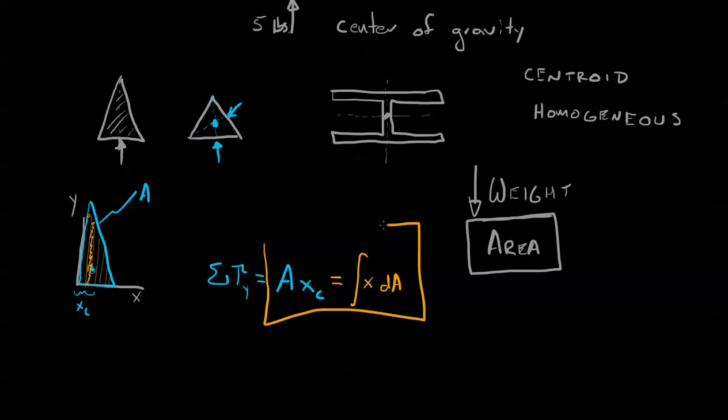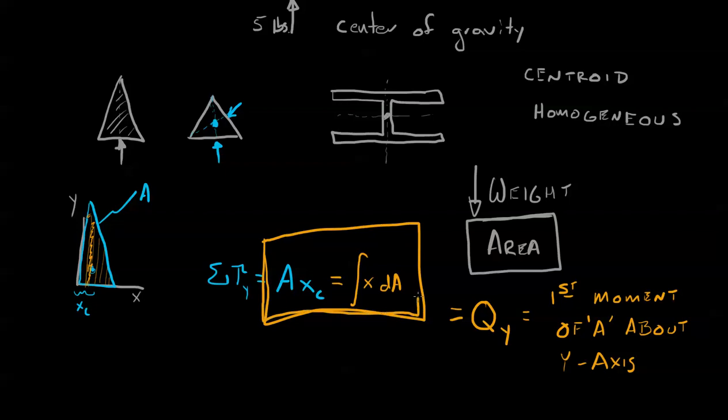What we have here is the definition of—well, this is the first moment about the Y axis. We call this QY. This is the first moment of area A about the Y axis. This is important. You're gonna learn a bunch of different moments, but it's important to know this is the first moment of A about the Y axis.